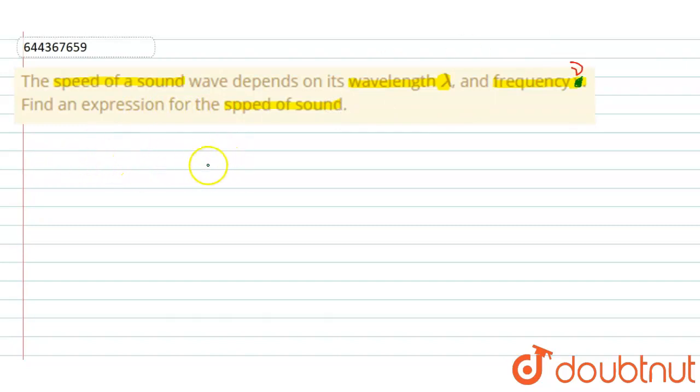So let the speed of sound be v, okay? And we know the wavelength is lambda, and the frequency is mu. This is given in the question.